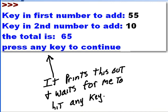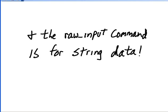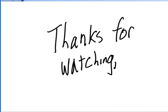It prints this out. I key in 10 and hit enter. It prints this out and waits for me to hit any key. So the input command is for numeric data and the raw input command is for string data. And that's it. Thanks for watching. This is Hoboken Gear.